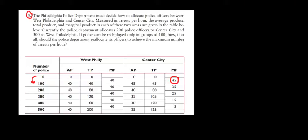With the same logic, let's see what happens when we increase the number of police by another hundred, going from 100 to 200 total. We're interested in the margin because it tells us how many additional arrests we get. For the extra hundred officers in West Philly, we have 40 more arrests — total increased from 40 to 80. In Center City, total arrests increased from 45 to 80, so the marginal increase is only 35. The next hundred police officers are more productive in West Philly, so they should go there.